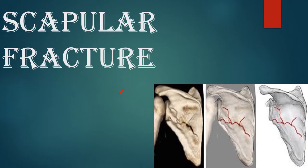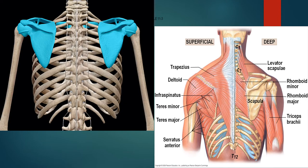Looking at picture number one, you can see a blue color shaded bone — this is called the scapula. The scapula is a triangle-shaped bone and it is protected by a lot of muscles. In picture number two you can see the outline of the scapula, showing how many muscles are attached to it, including the spine of the scapula. It has a very complex system of surrounding muscles.